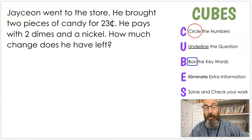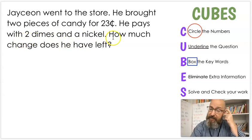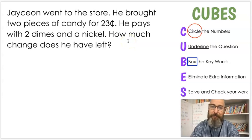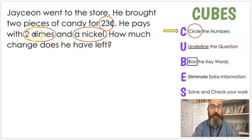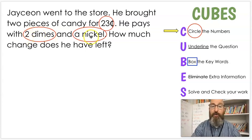All right, let's get started. We're going to go through the whole process. Let's read this with me. Jayceon went to the store. He bought two pieces of candy for 23 cents. He pays with two dimes and a nickel. How much change does he have left? So what's step one? Circle the numbers. What are the numbers? It's a little bit trickier with money questions, I will tell you.